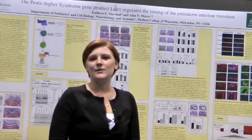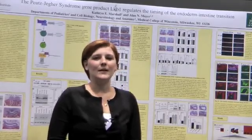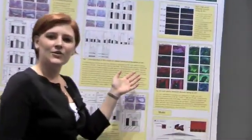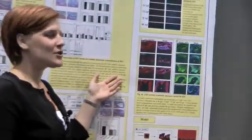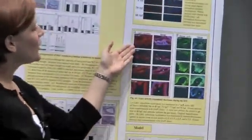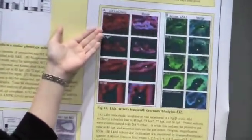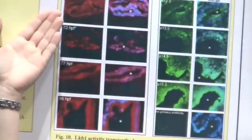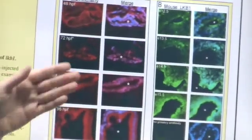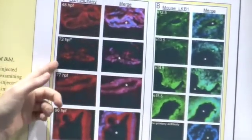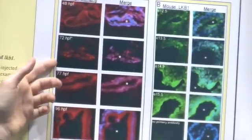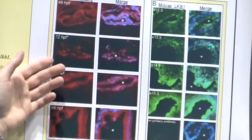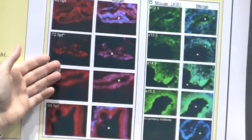LKB1, when active, is localized in the cytoplasm. What we found upon making a transgenic fish is that in the earlier phases of intestine development, LKB1 is cytoplasmically localized and active. But then it becomes nuclear localized during the intermediate phases, at approximately 72 hours, where it is inactive.